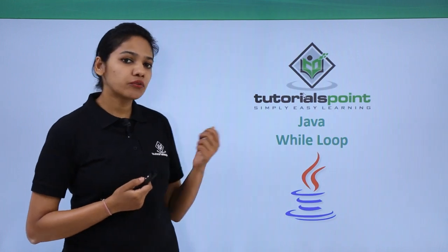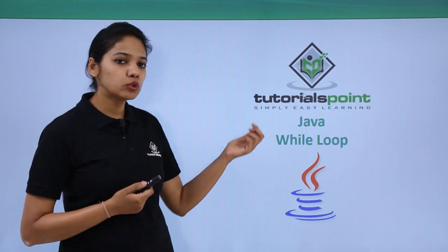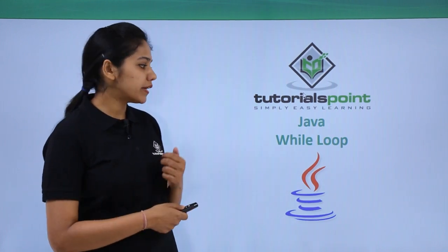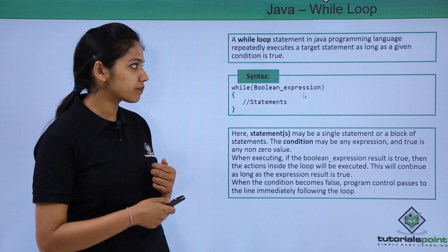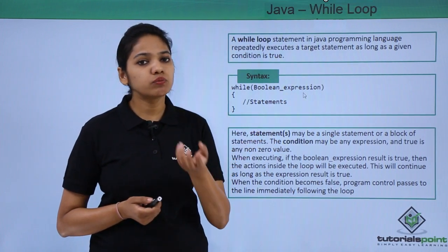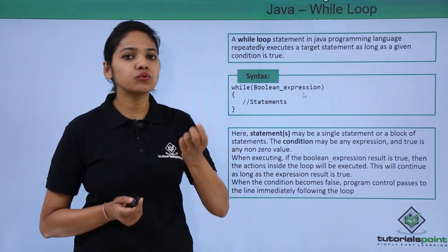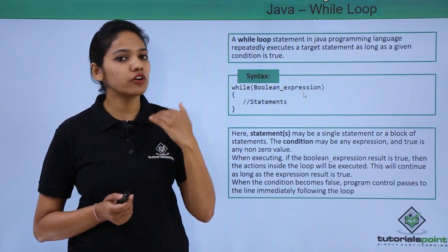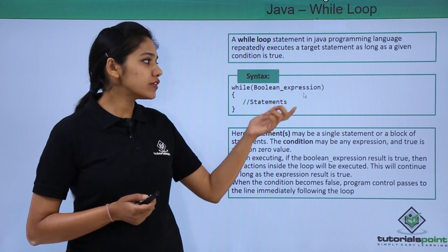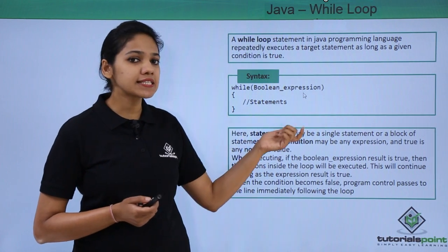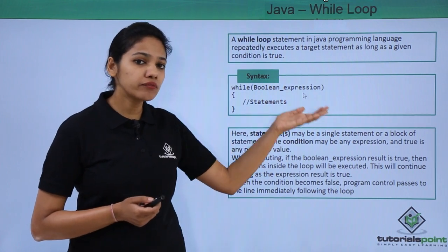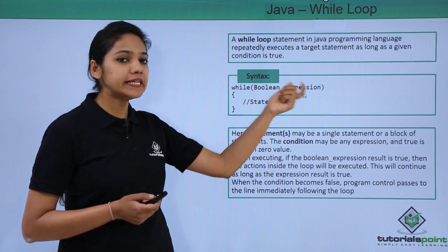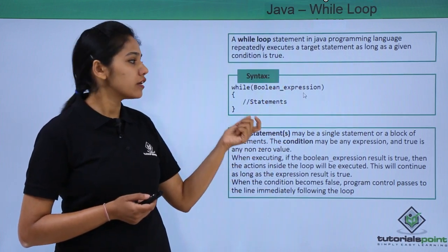Let us see the first kind of loop — the while loop — in detail. A while loop allows you to run a block of statements a number of times. Let us first see the syntax, how we can write a while loop and what happens with each part of it.